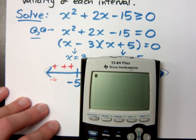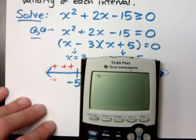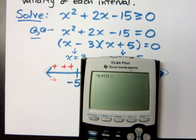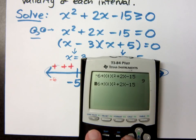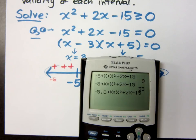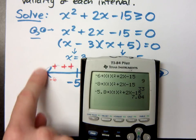If I store negative 6 into x, and then I want to evaluate x squared plus 2x minus 15, I get something that's positive. If I change this up and I type in negative 8, I still get something positive. Anything that is on the left side, like negative 5.8, I still get something positive. Anything in this interval will return a positive value.